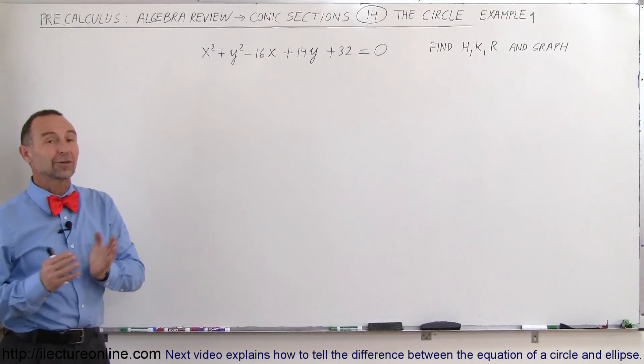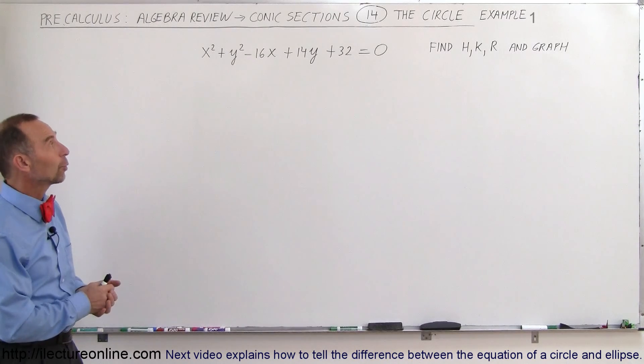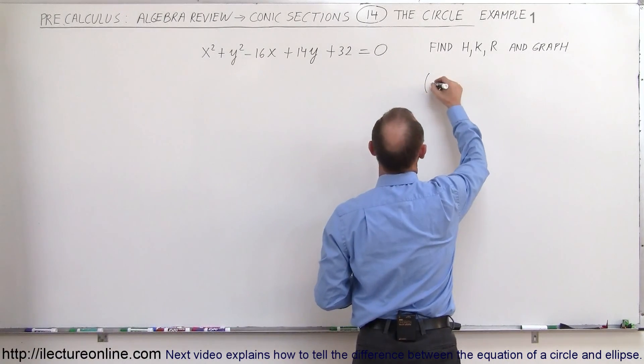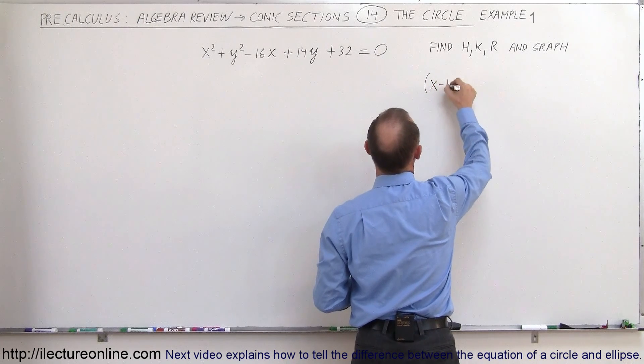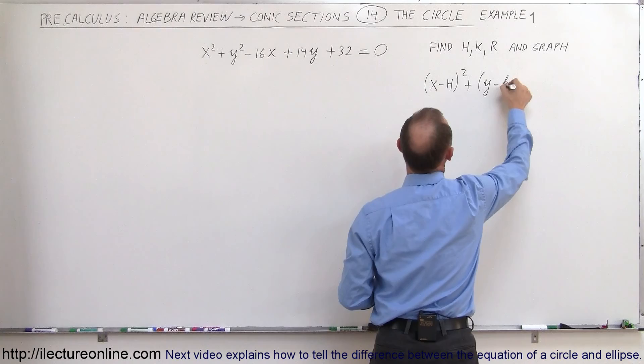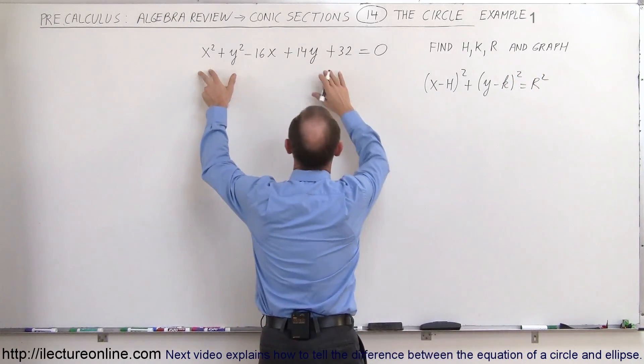Welcome to ElectronLine and here's our first example of how to graph a circle using the standard equation. The standard equation will look like x minus h quantity squared plus y minus k quantity squared equals r squared, which means we need to take this equation and make it look like that.